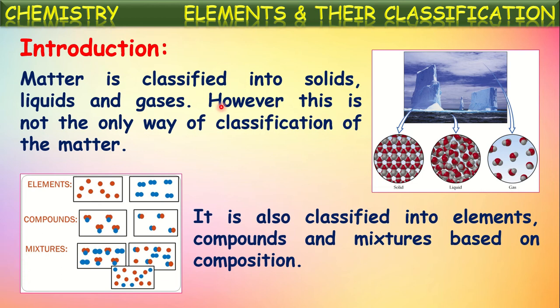The first classification is physical — based upon the arrangement of molecules inside the matter. Gas particles are very loosely packed, liquid particles are tightly packed, and solid particles are very tightly packed. The second classification is chemical — based upon the type of particles existing in the matter, classified into pure and impure substances. Pure substances are further classified into elements and compounds, and the other kind is mixtures.